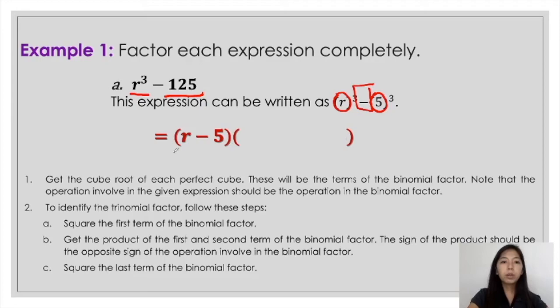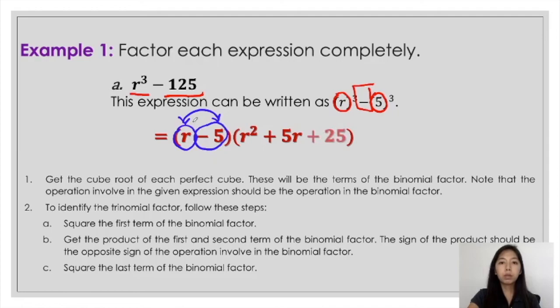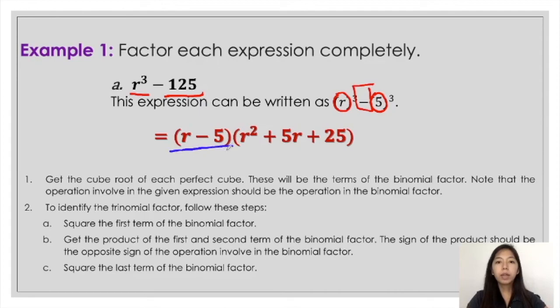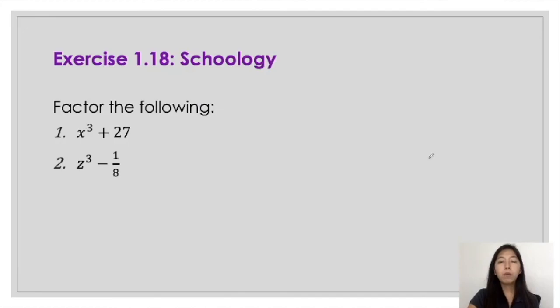To get the terms in the trinomial factor, look at the binomial factor. The first term is r, and the square of r is simply r squared. Next, multiply the two terms: r times negative 5 is negative 5r, but you have to get the opposite sign, so that becomes positive 5r. Next, get the square of the second term, negative 5: that would be negative 5 times negative 5, which is positive 25. So the factors of r cubed minus 125 are the quantity of r minus 5 times the quantity of r squared plus 5r plus 25.